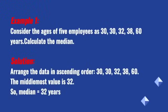Example 1. Consider the ages of 5 employees as 30, 30, 32, 38, 60 years. Calculate the median. Solution. Arrange the data in ascending order. 30, 30, 32, 38, 60. The middle most value is 32. So, median equals 32 years.